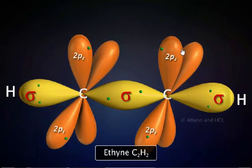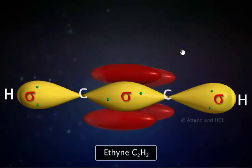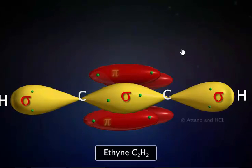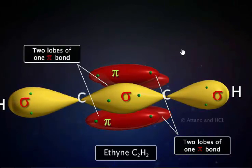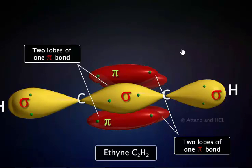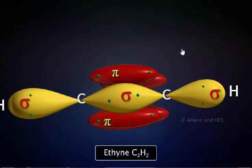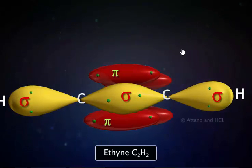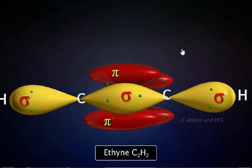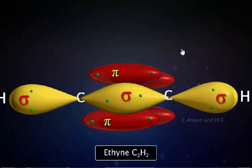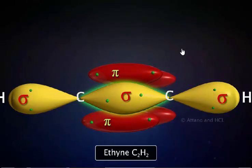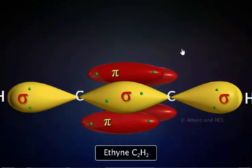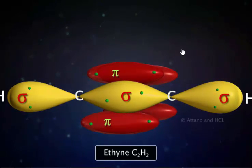Now let us observe the overlap of the p orbitals. Both the two py and the two pz orbitals can overlap side to side. This kind of covalent bond is called a pi bond. The electron density is concentrated above and below the plane of the nuclei of the bonding atoms. In each pi bond, two electrons are shared and are free to move in both regions of the bond. A triple bond is composed of one sigma and two pi bonds. For rotation to occur along the carbon-carbon bond, the pi bonds would have to be broken.